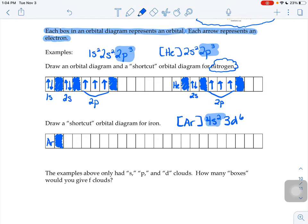The next piece we're going to focus on there is the 4s. Well, there's only one way to draw an S-shaped cloud. It's the one that looks like a sphere. So I'm going to give it one box.